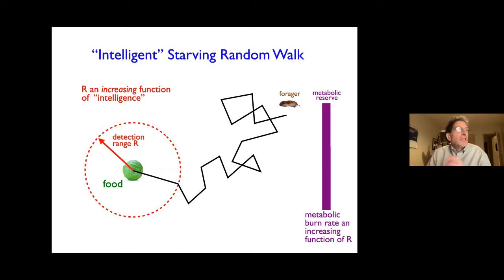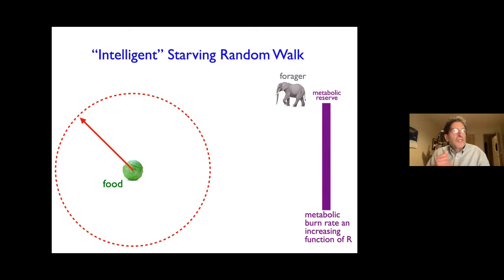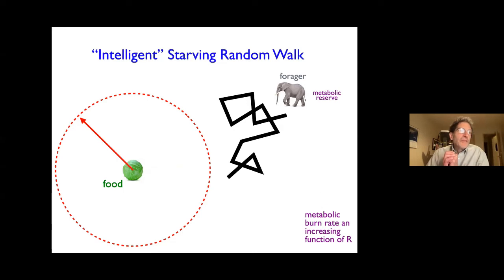On the other hand, we could imagine a much larger forager. Here's an elephant who has a much larger detection radius. But on the other hand, because he's a much bigger animal, he burns up his metabolic reserves at a much quicker rate. And so in this particular case, he's again doing a random walk. His burn rate is much faster, and he runs out of metabolic energy before he gets to the food. And so this elephant turns into a dead elephant. So this is the model.